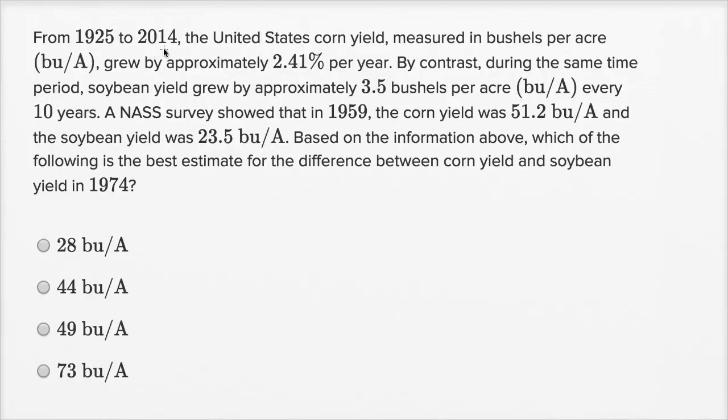From 1925 to 2014, the United States corn yield measured in bushels per acre grew by approximately 2.41% per year. By contrast, during the same time period, soybean yield grew by approximately 3.5 bushels per acre every 10 years.